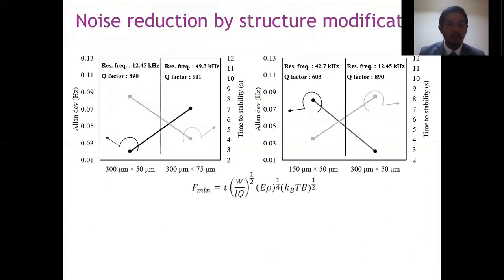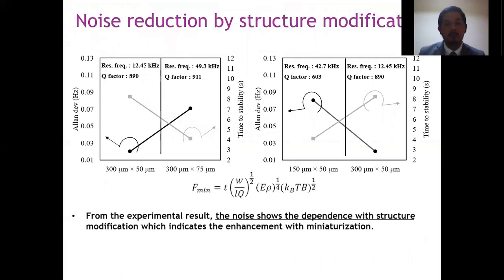To confirm the theory, several dimensions of cantilevers are compared by Allen deviation analysis. This graph is comparison of width and this graph is comparison of length of the structure. The noise shows the dependence with structure modification which indicates the enhancement with miniaturization is possible. For example, thinner structure has lower noise than the wider structure. And if we follow the thermomechanical noise equation, we can see that the longer structure has lower noise than the shorter structure.